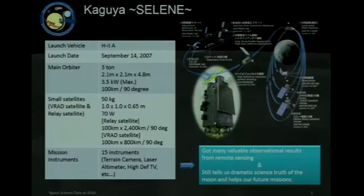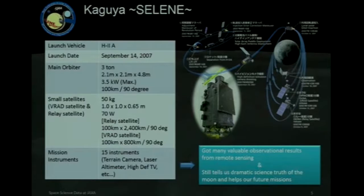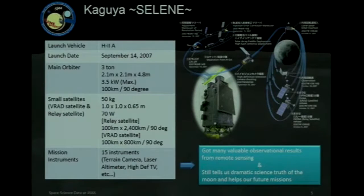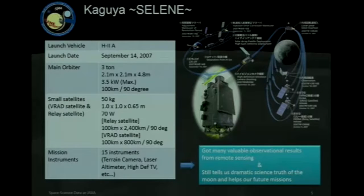Kaguya aimed to make clear the origin of the moon and its geological evolution. It gathered much information about the lunar surface environment and measured moon gravity precisely. Kaguya completed its mission and was controlled to impact the moon in June 2009.